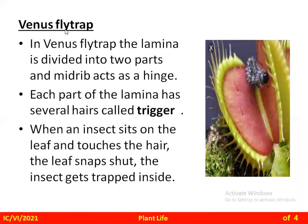The next example of an insectivorous plant is the Venus fly trap. In the Venus fly trap, the lamina is divided into two parts and the midrib acts as a hinge. Each part of the lamina has several hair-like structures on the edge called triggers. When an insect sits on the leaf and touches the trigger hairs, the leaves snap shut and the insect gets trapped inside. Digestive enzymes are then released to digest the insect.